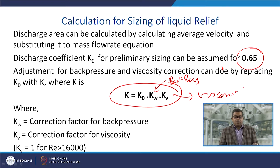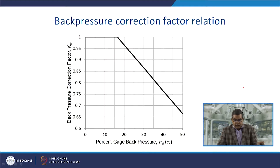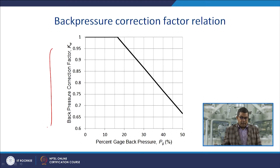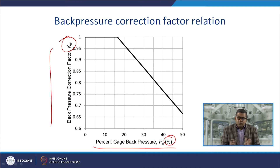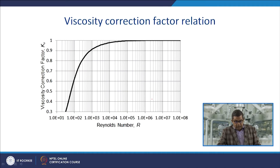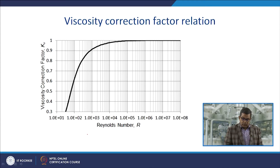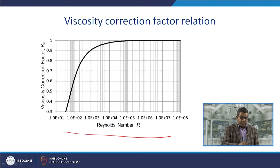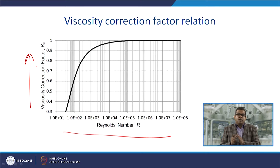The back pressure correction factor Kw relationship and the viscosity correction factor Kv relationship are shown in standard plots. The x-axis for the back pressure plot shows the percentage gauge back pressure Pg, and Kw is read off the curve. For viscosity correction, the x-axis is Reynolds number and the y-axis is Kv, allowing calculation of Kv given knowledge of the Reynolds number.